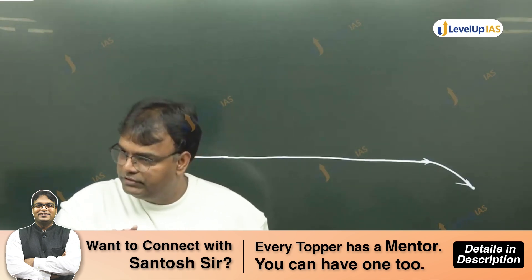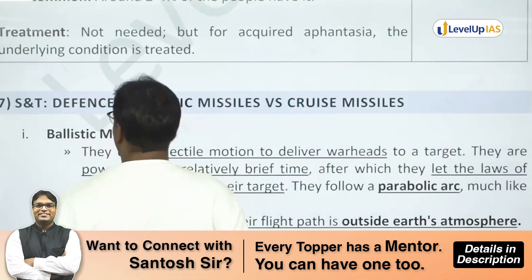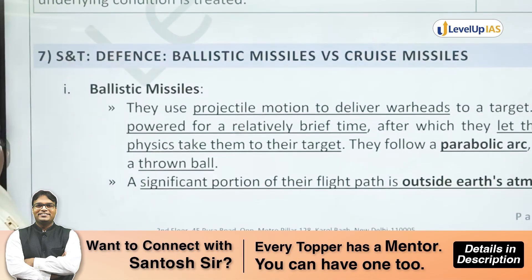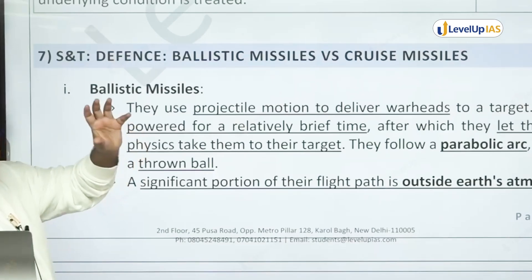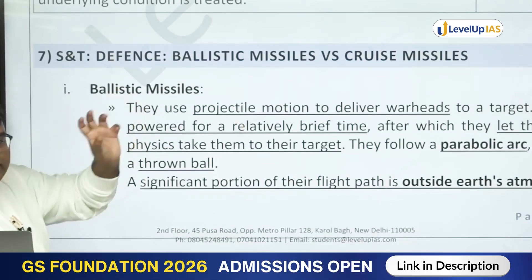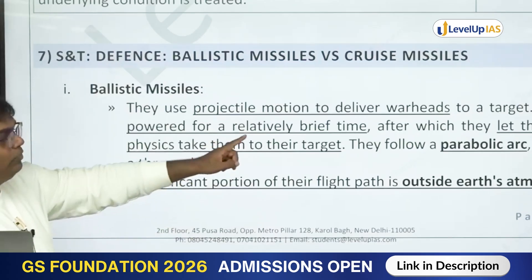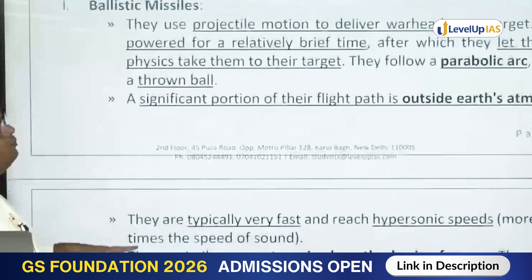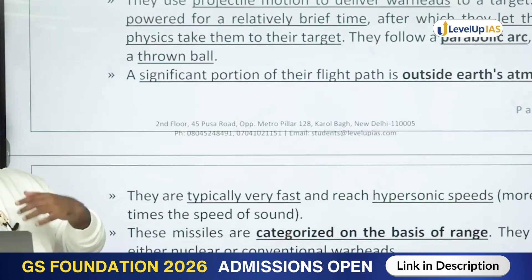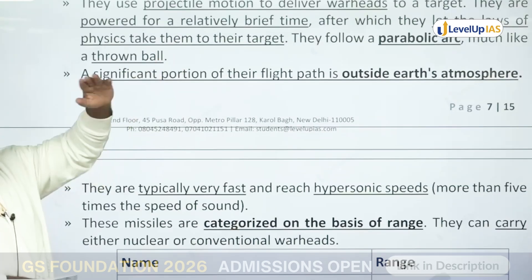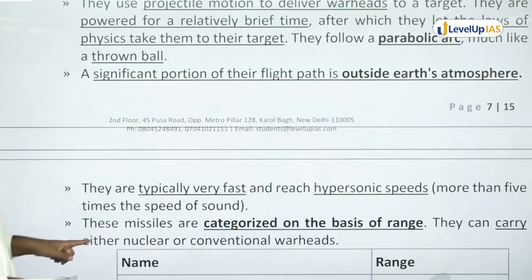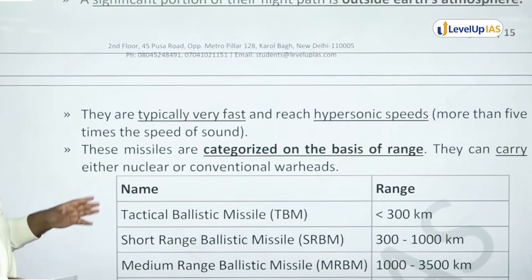From the notes: Ballistic missiles use projectile motion to deliver warheads to a target. They are powered for a relatively brief time, after which they let the laws of physics take them to their target. They follow a parabolic arc, much like a thrown ball. A significant portion of their flight path can be outside Earth's atmosphere if it is a long-range missile — going to a greater height, part of its flight will be outside Earth's atmosphere.